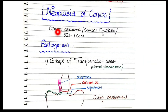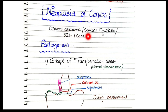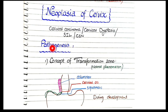In this video we will discuss the pathogenesis of neoplasia of the cervix. Neoplasia of the cervix can be in the form of cervical carcinoma or its precursor lesions, known as cervical dysplasia, SIL (squamous intraepithelial lesion), or CIN (cervical intraepithelial neoplasia). We will discuss the pathogenesis of these lesions.